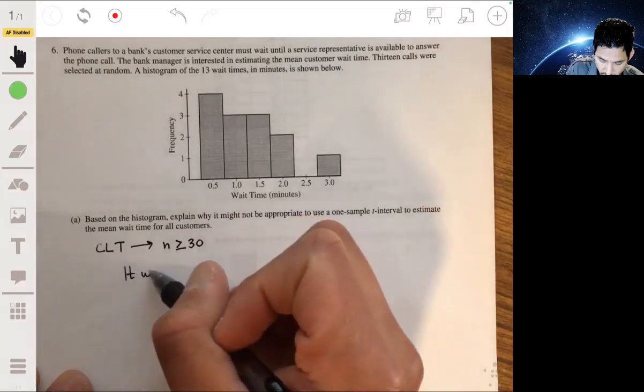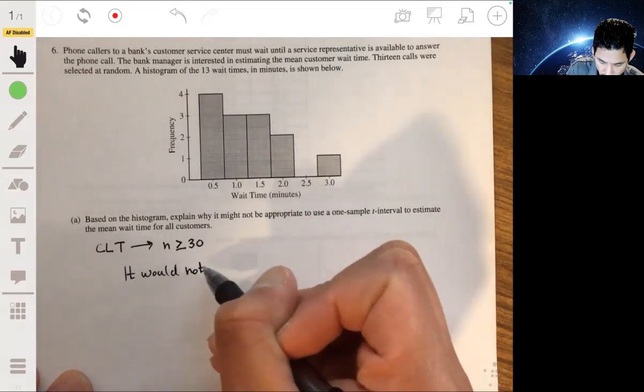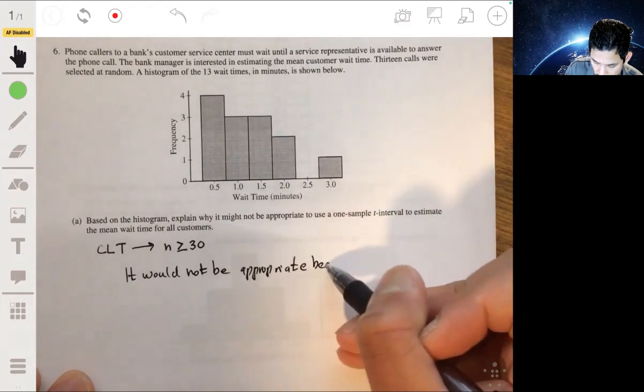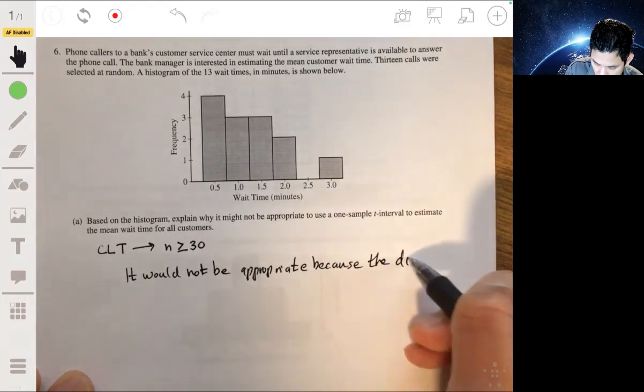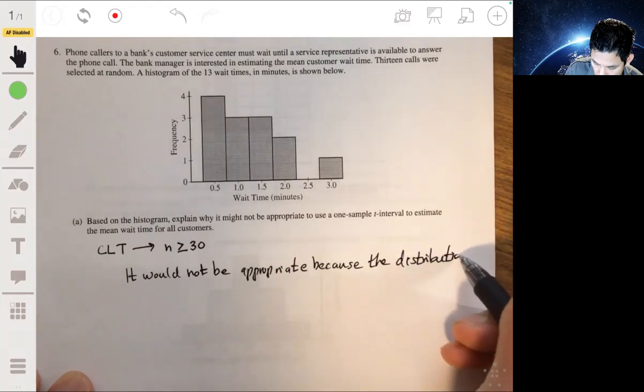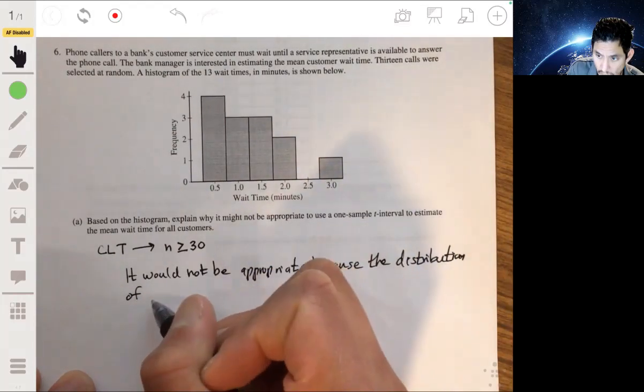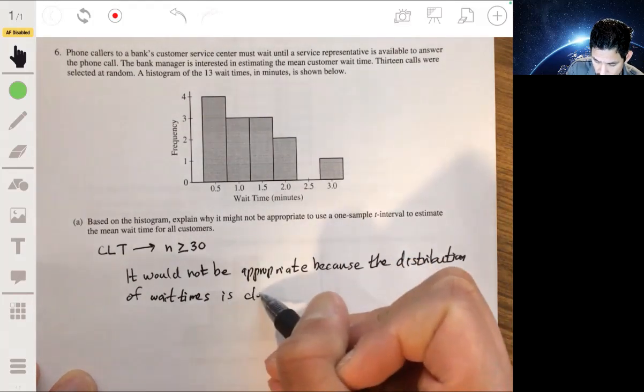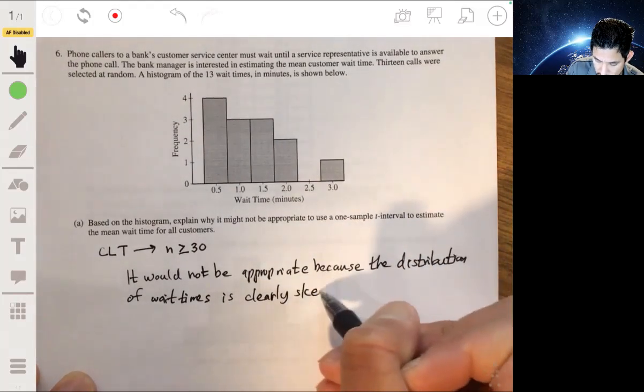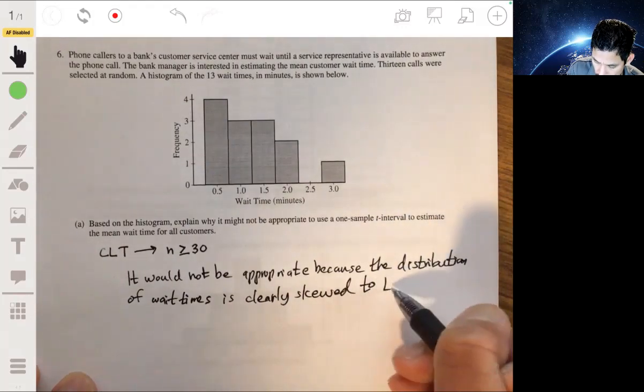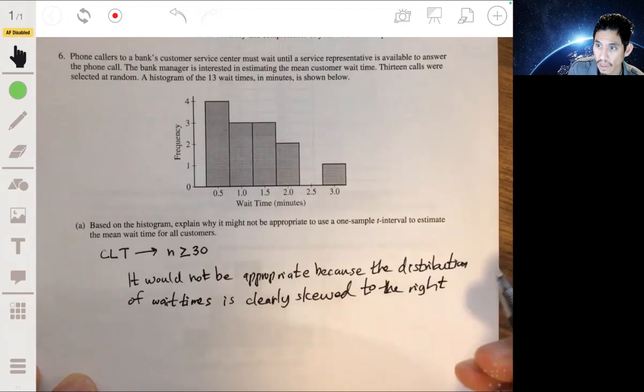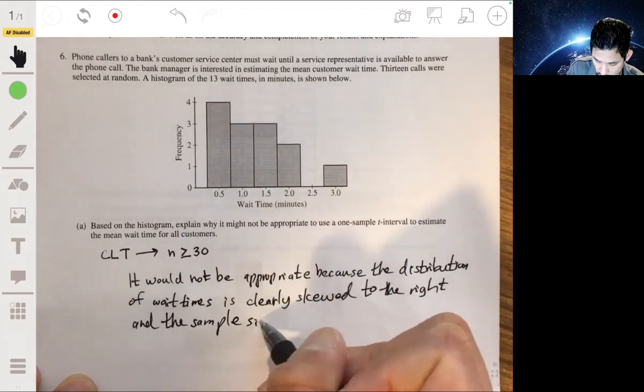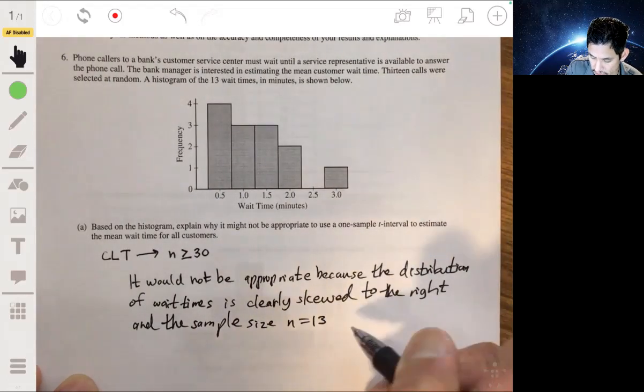So it would not be appropriate because the distribution of wait times is clearly skewed to the right and the sample size n equals 13 is small.